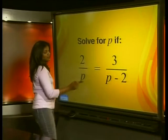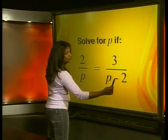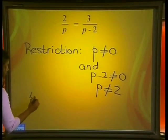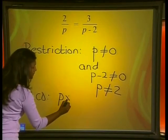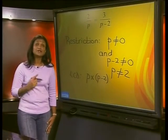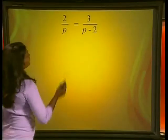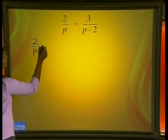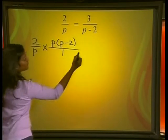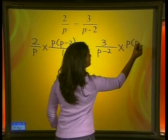Here we have 2 denominators: P and P minus 2. Remember that P minus 2 is regarded as one whole term — P minus 2 cannot be further factorized. So we can write the LCD as P multiplied by P minus 2. To simplify the equation we must multiply every term in the equation by the LCD. So we multiply 2 over P and 3 over P minus 2 each by P times P minus 2 over 1.